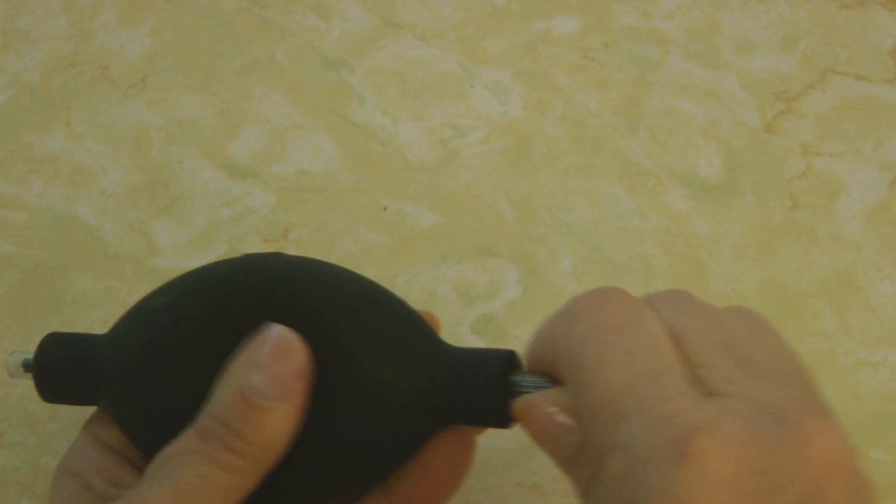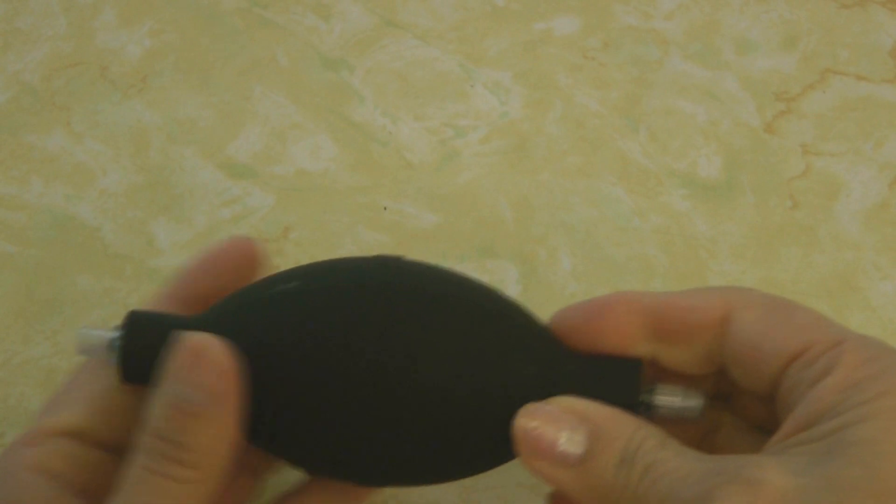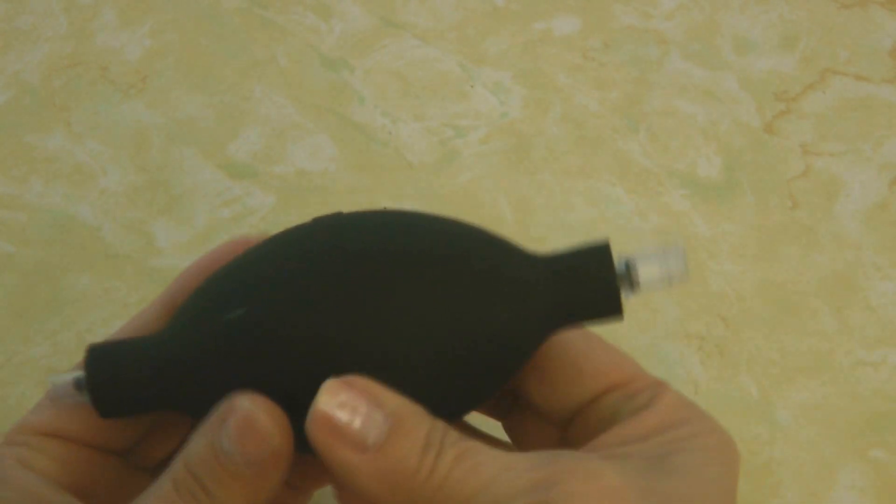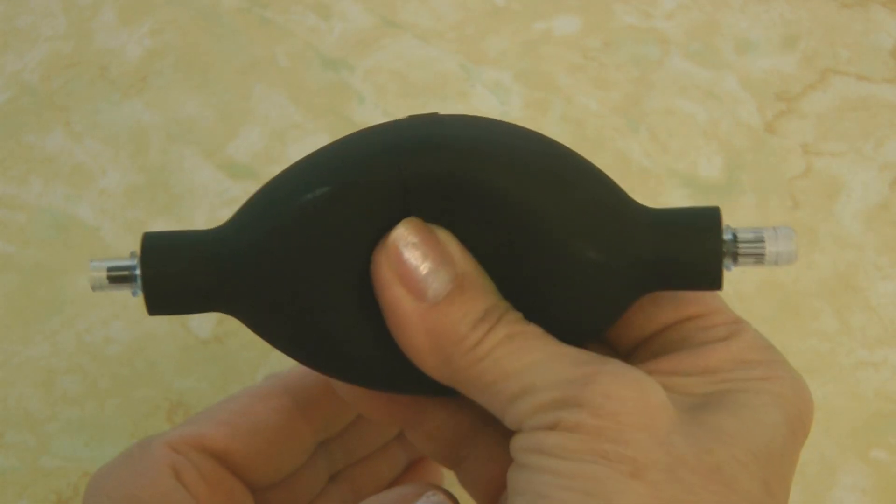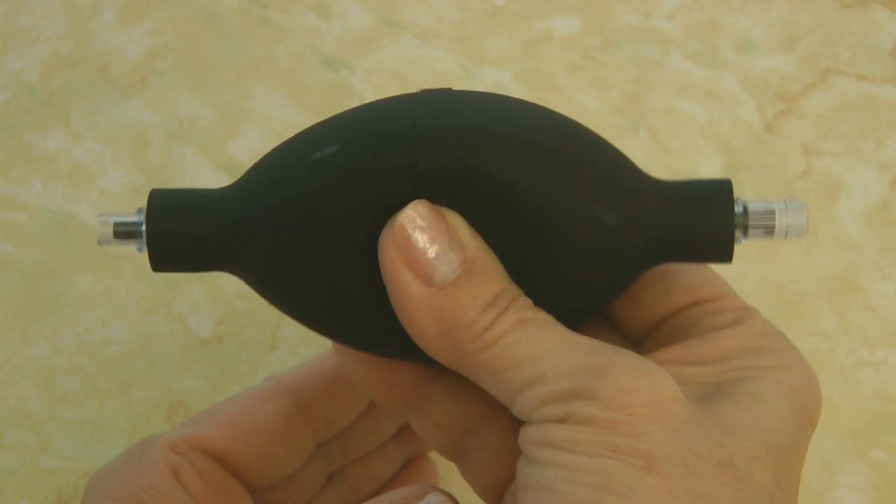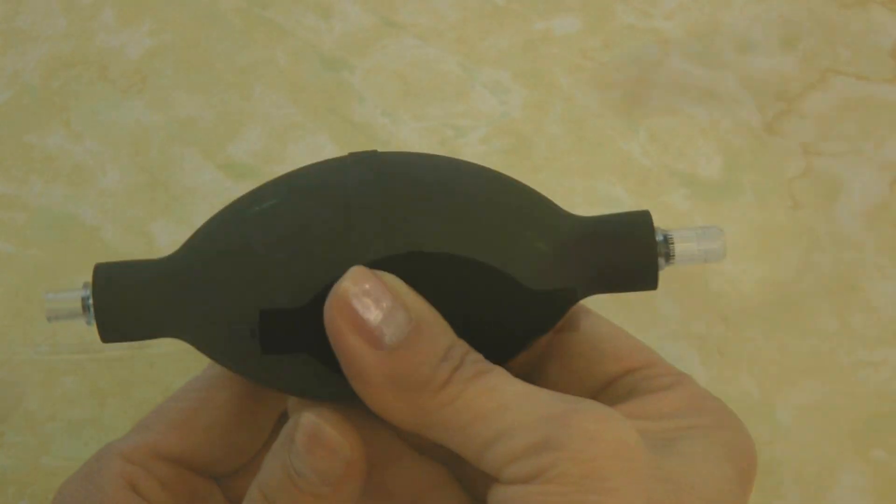You're going to insert the two valves into the two ends of the black bulb. Then you're going to fasten the two pieces of tubing onto those valves.